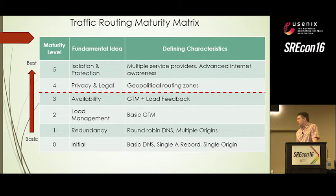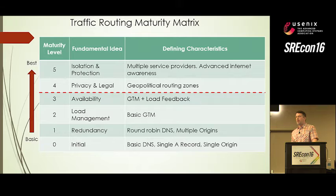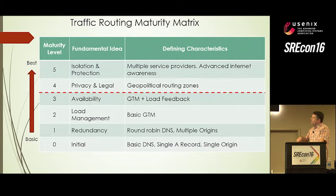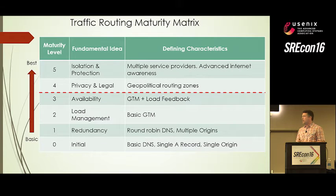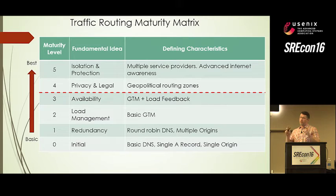Moving into what our team does: the Netflix talk yesterday mentioned they spend a lot of time consulting, and that's very similar to what we do. Our team historically has consulted with many product teams inside Microsoft to advise them on their current traffic management patterns. This is part of a matrix we use that allows us to gauge where they're at. The basics that aren't as important are below the red line — that's where services have basic traffic management systems — versus people who recognize that the internet is not a monolithic thing. Above the line you're talking about geopolitical constraints like tax laws and privacy, diverse origins like multiple cloud providers, and recognizing the nuances of the internet.